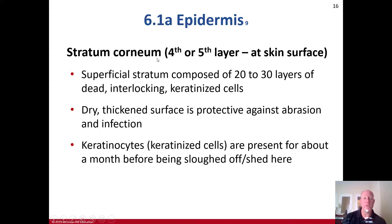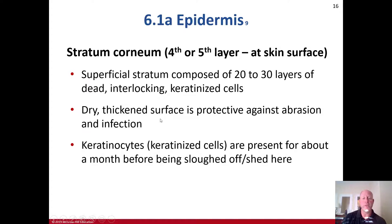The stratum corneum is the layer that we actually see. It's the fourth layer in thin skin or the fifth layer in thick skin, but the most superficial layer in all aspects of our skin. It's composed of 20 to 30 layers of dead, interlocking keratinized cells — those squamous cells are now very flattened. Their dry, thickened surface is protective against abrasions and infections, and these keratinized cells are present for about a month before they are sloughed off or shed.